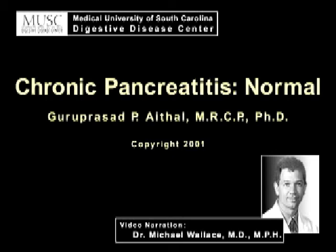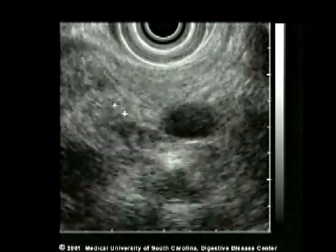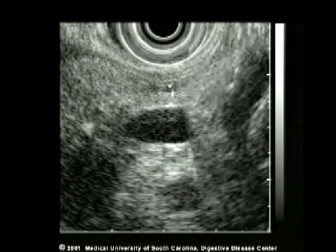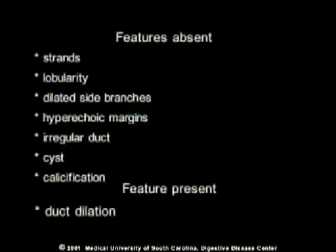This video demonstrates cases from our consensus panel series where the entire group of experts agreed that each examination represented a normal pancreas. Each segment is followed by a description of the features that the entire group agreed were present or absent. Each case was defined by the fact that the entire group agreed that chronic pancreatitis was not present in these examinations.